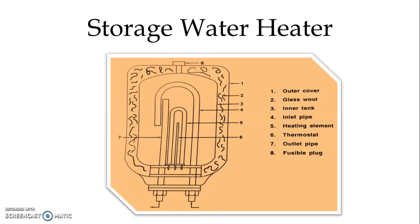In the figure we can see the construction of the storage type of water heater. We have the outer cover made of sheet steel, and on the inner side we have the copper inner tank. In between we have insulation, which is glass wool. We have an inlet pipe that takes water in, and an outlet water pipe to take hot water outside. The vertical type heating element has leads taken out for electrical connection, and we use a vertical strip-type thermostat to maintain the temperature of the water.